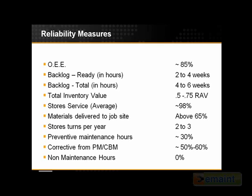Managing your backlog to two to four weeks of ready backlog and four to six weeks of total backlog is very critical to stay ahead of things. What happens to most people is their backlog is growing faster than their ability to work it off, so over time they get further and further behind. I've seen operations with total backlogs of two years — meaning their total workforce would take two years to work off the backlog — which tells your operations partner it will be two years before you get to the next low priority job, and we lose our credibility.